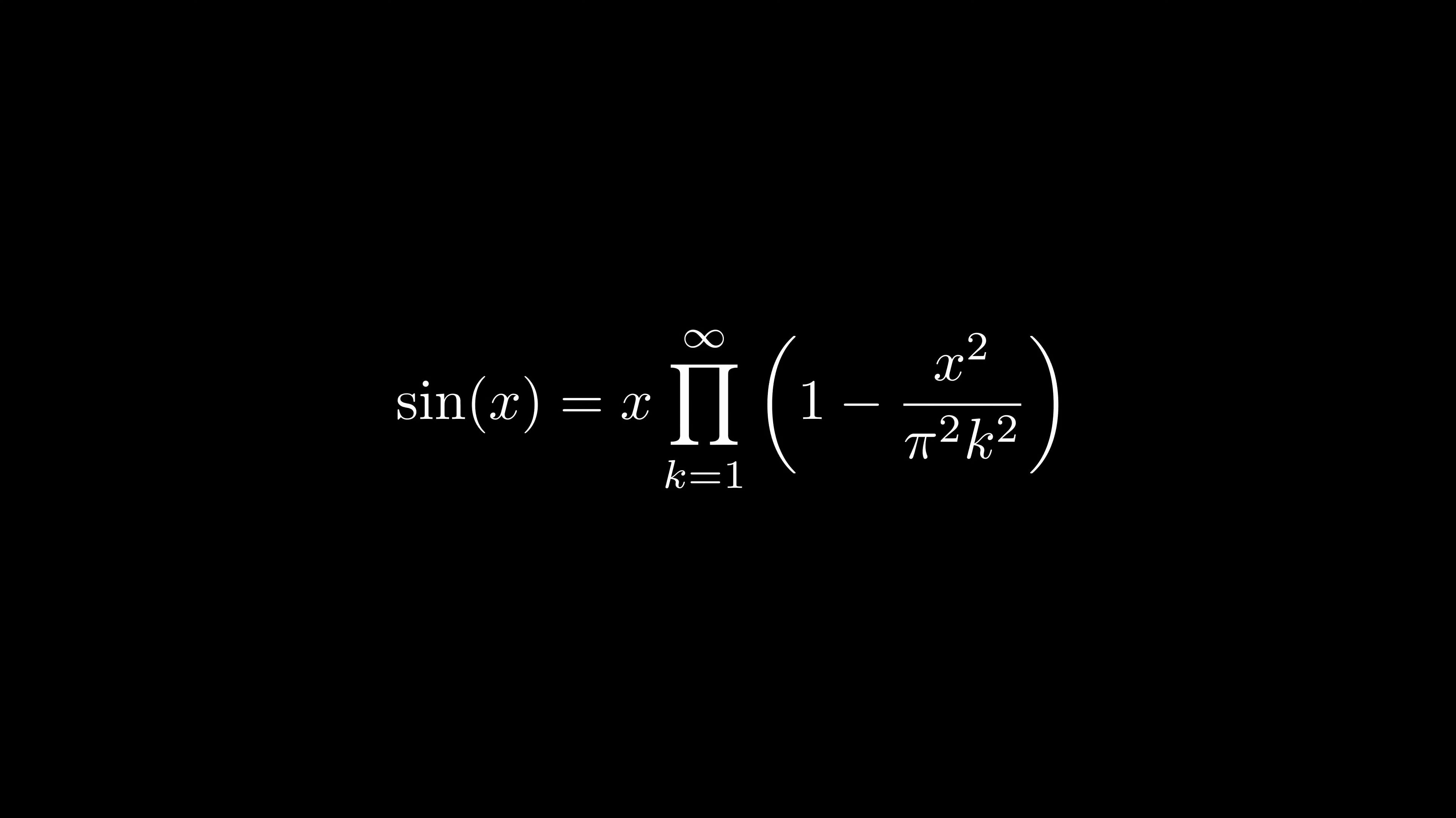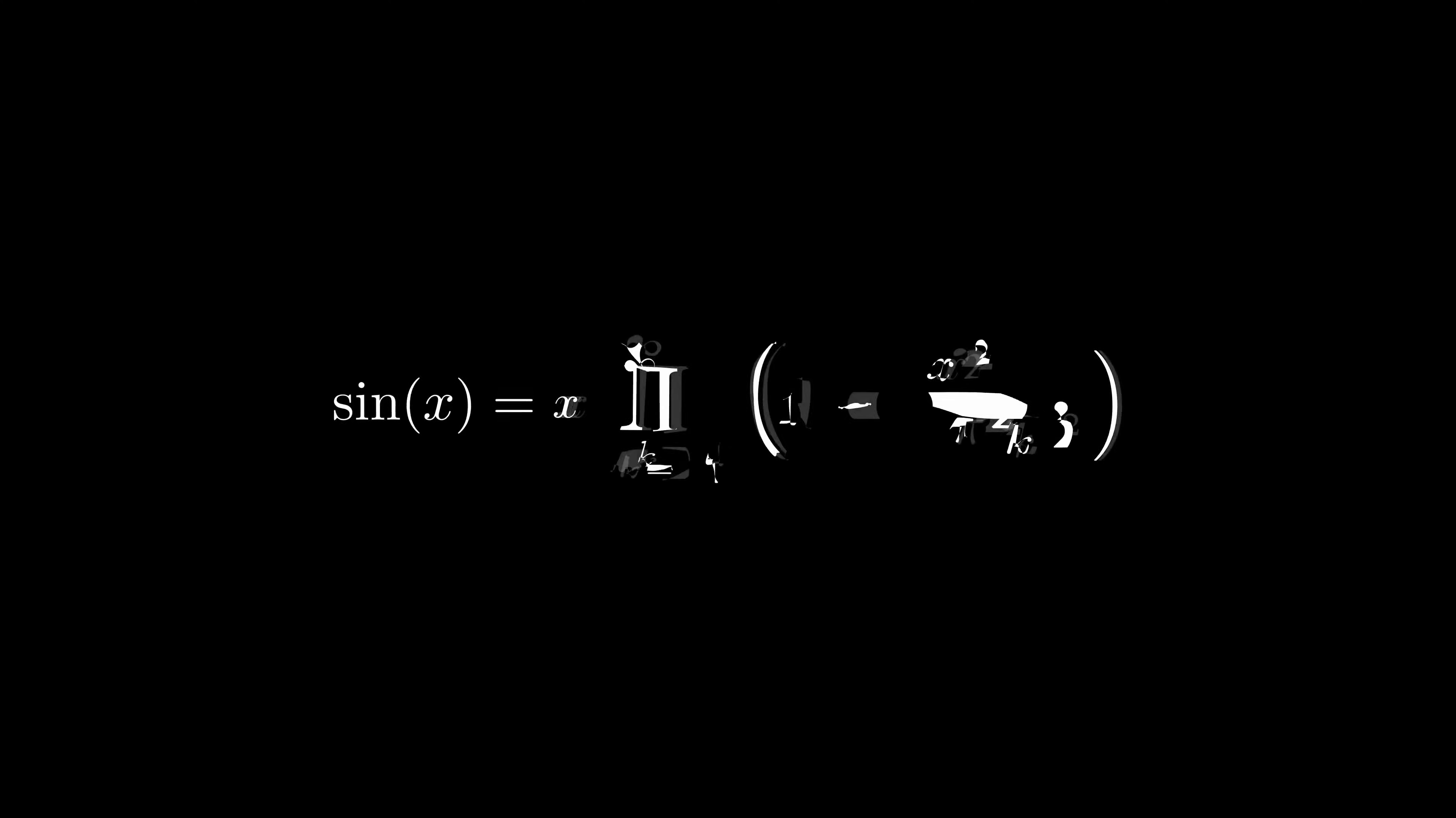Now, it'll actually be easier to use the expanded version of the formula before we did anything fancy with product notation. It'll also be easier if we swap the order of terms in each numerator, because this makes the formula follow a clear pattern. Now, all we have to do is to take the logarithmic derivative of both sides.